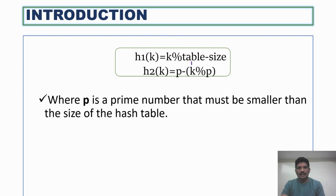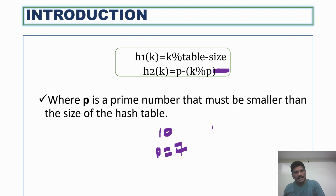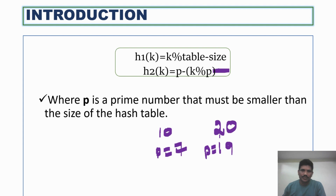h1(k) = key modulus table size. h2(k) = p minus (k modulus p), where p is a prime number. That value must be smaller than the size of the hash table. For example, if the hash table size is 10, then p must be less than 10, so p could be 7. If the hash table size is 20, then p could be 19. The p-value depends on the hash table size and must be smaller than it.